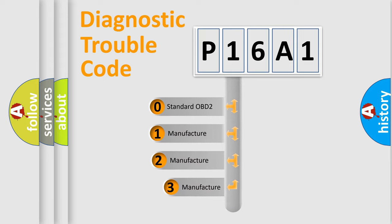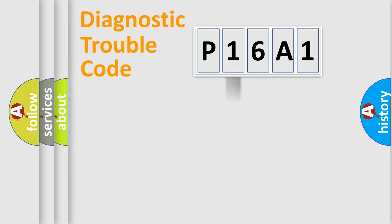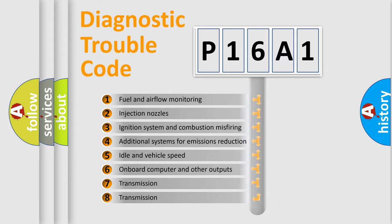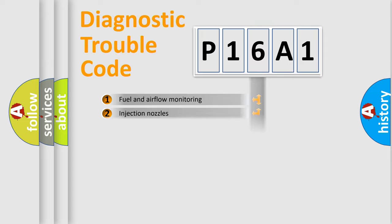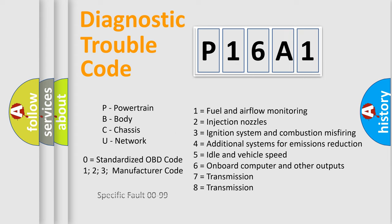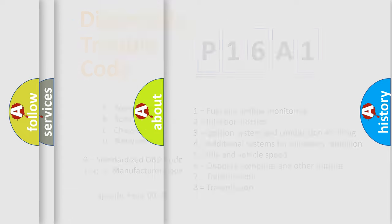If the second character is zero, it's a standardized error. If it's 1, 2, or 3, it's a manufacturer-specific error. The third character specifies a subset of errors. The distribution shown is valid only for standardized DTC codes. Only the last two characters define the specific fault of the group. Remember, this division is valid only if the second character is zero.